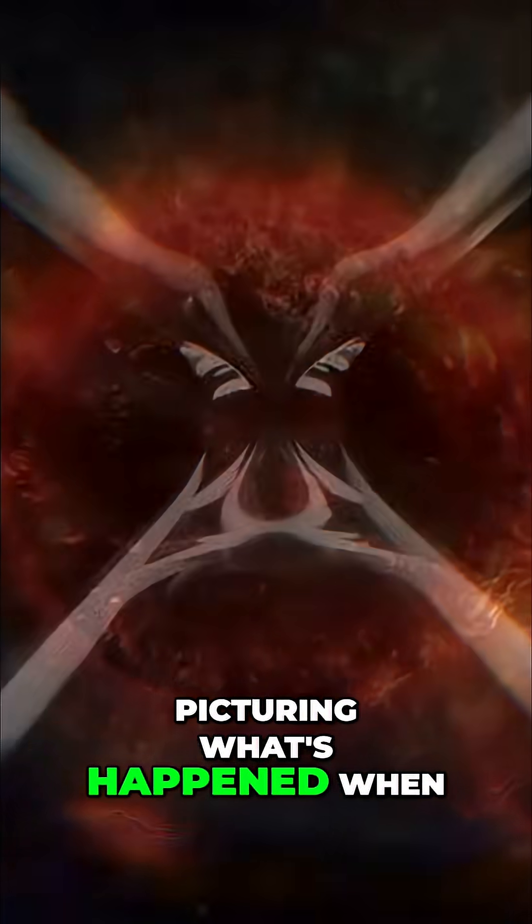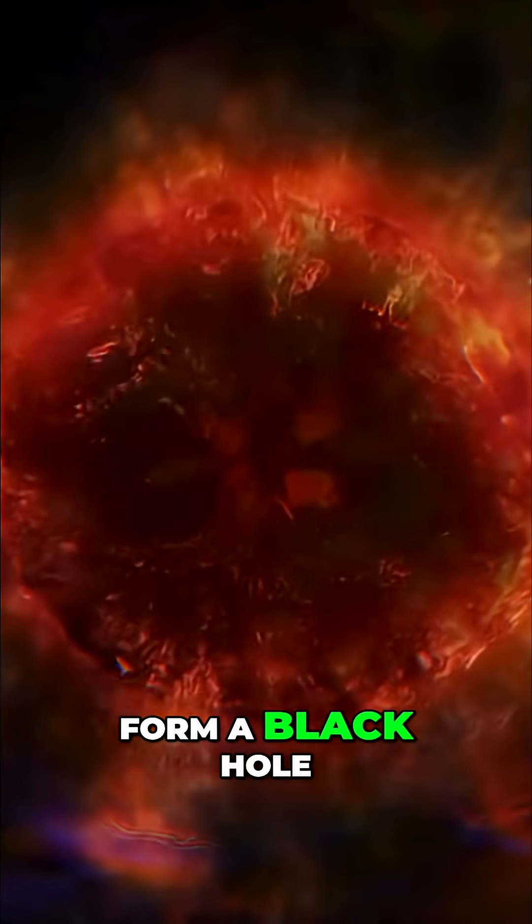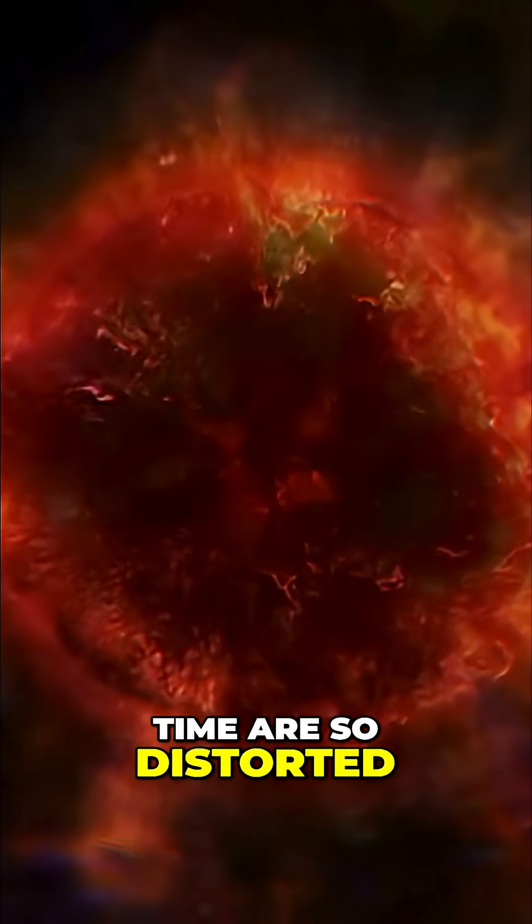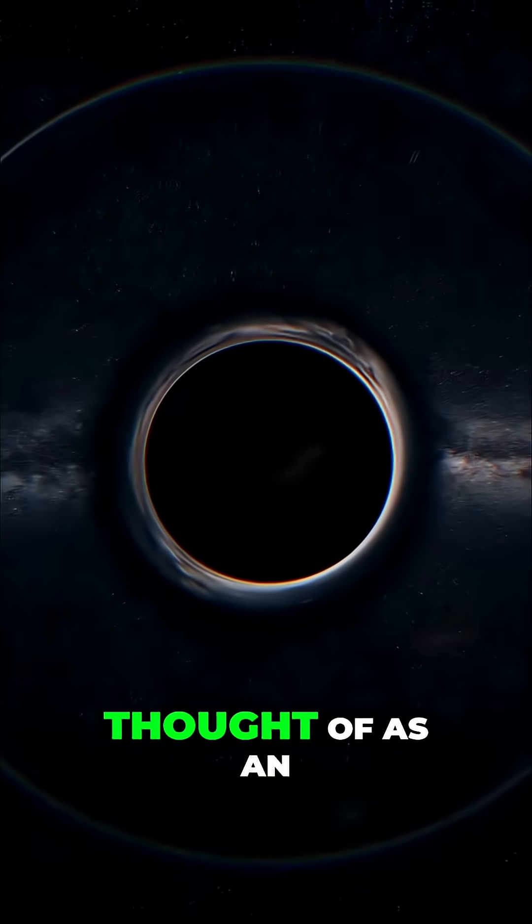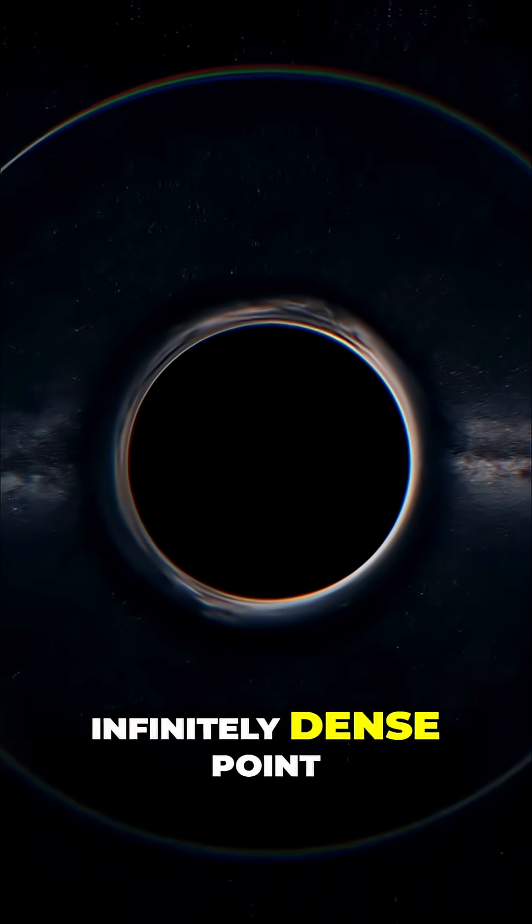So one way of picturing what's happened when a star collapses to form a black hole is that space and time are so distorted that, in a sense, their roles swap. And so what we thought of as an infinitely dense point,